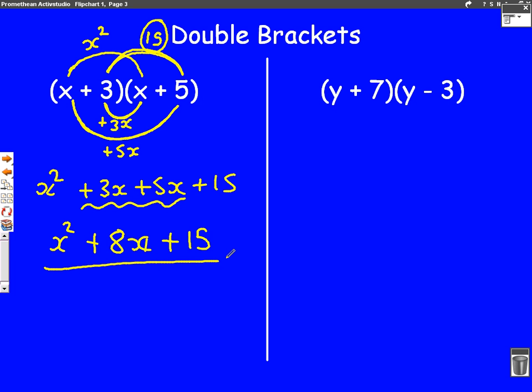Let's have a go at a slightly harder one on this second question. Again, we're going to use the smiley face method. So we put on our arrows. Each one of those arrows means multiply. So let's work them all out separately. The first one goes from y to y. Well, that would be y squared when we times them together. Second one, a little bit harder now. 7 times minus 3. Well, 7 times 3 is 21. So 7 times minus 3 is minus 21.